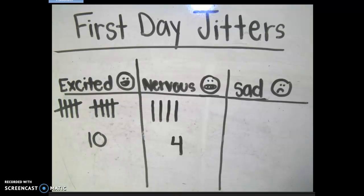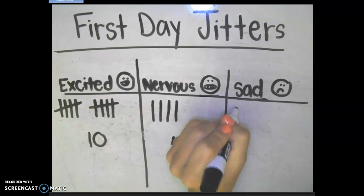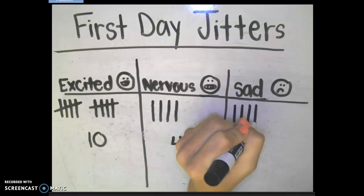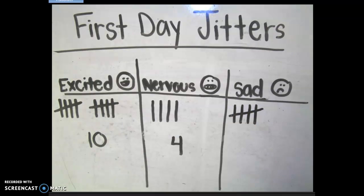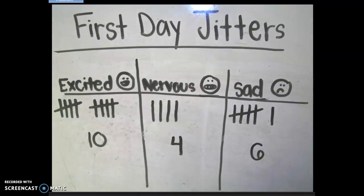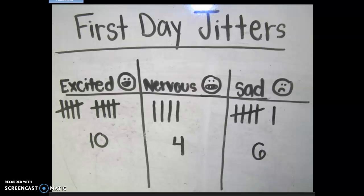And next, we have 'sad.' I had six people tell me that they are sad: one, two, three, four, five, six. So now I've set up my table and my chart using tallies of how many people are excited, nervous, and sad.